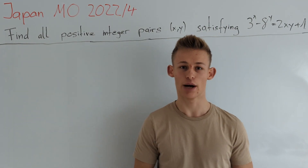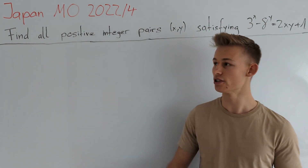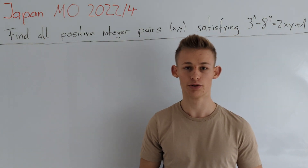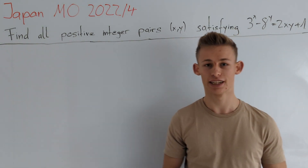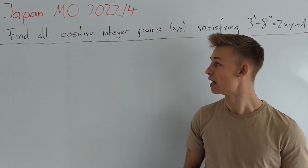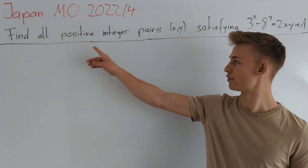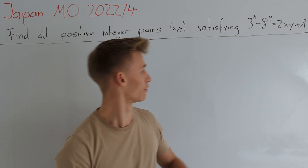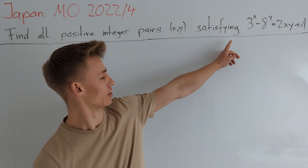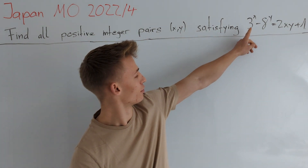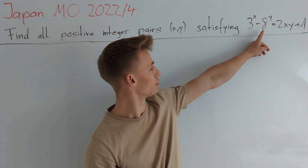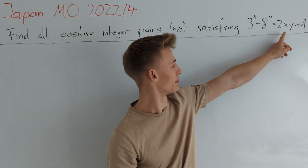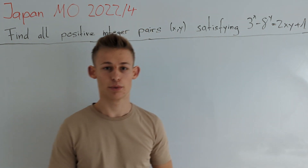Hey guys! Today I want to present a solution for the Japan Math Olympiad 2022 Problem 4. Let's have a look at the problem statement. We are asked to find all pairs of positive integers such that the following equation holds: 3 to the power of x minus 8 to the power of y should be equal to 2xy plus 1.